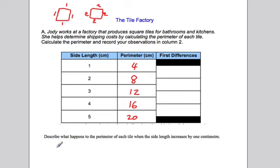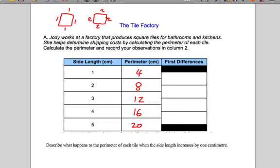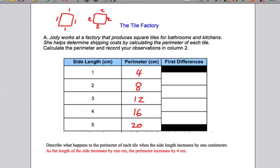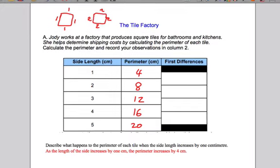And so in this question, describe what happens to the perimeter. The next question was to describe what happens to the perimeter of each tile when side length increases by 1 centimeter. So when we go from 1 to 2, we go from 4 up to 8 — that's an increase of 4. Going from 2 to 3, we go up another 4. So the answer is that as the length of the side increases by 1 centimeter, the perimeter of the square increases by 4 centimeters.